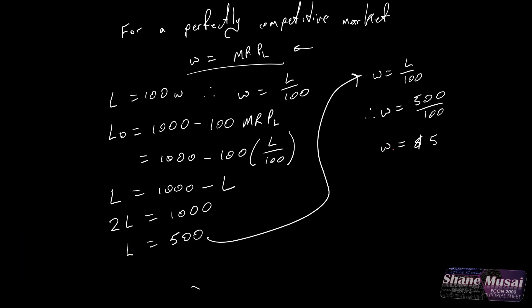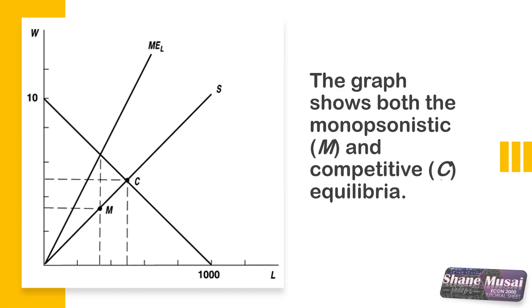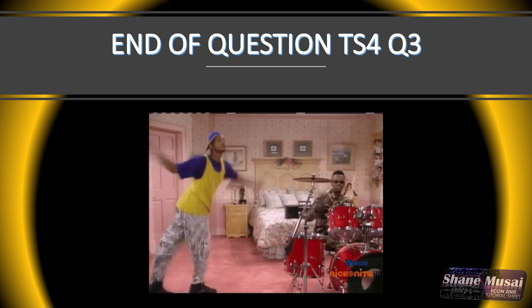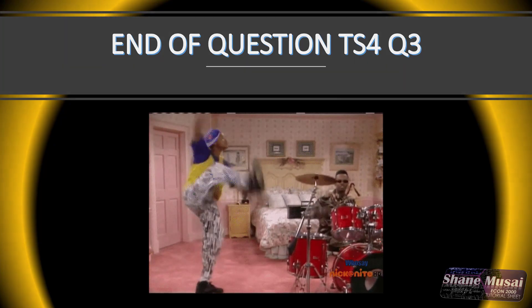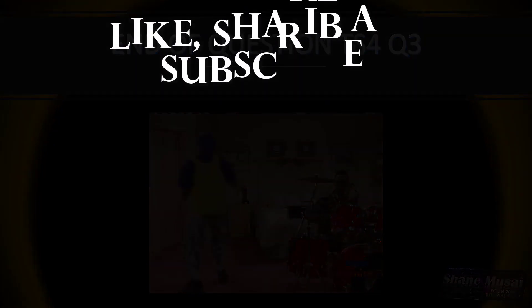That answers part B. Part C of the question says to graph the results. This graph shows both the monopsonistic and the competitive equilibrium. This part here is the monopsonistic equilibrium and this part here is the competitive equilibrium. And that's it for this question. Thank you for watching, and I'll see you in the next one. Goodbye.